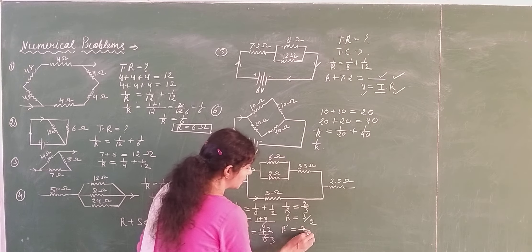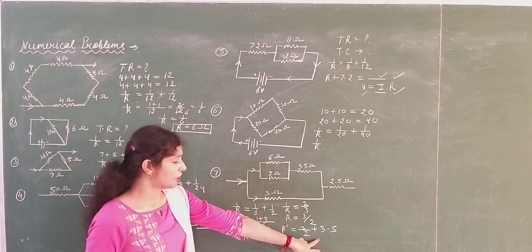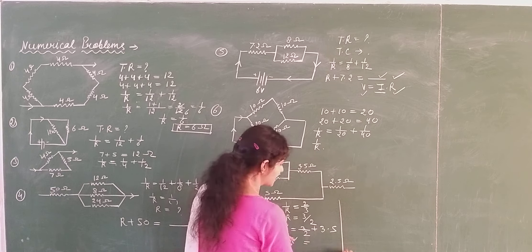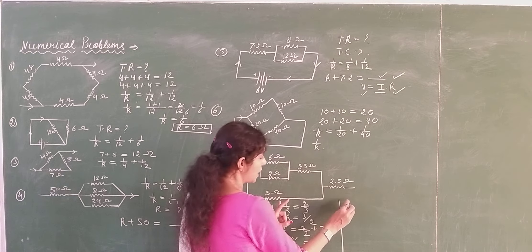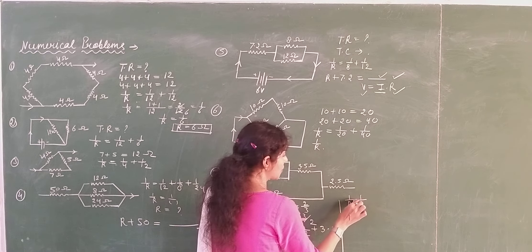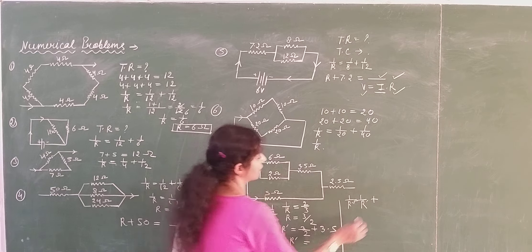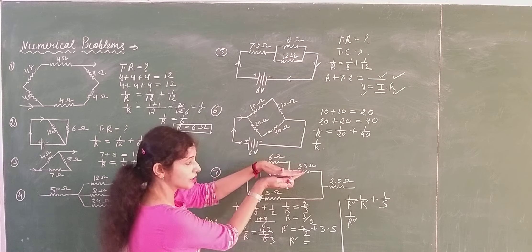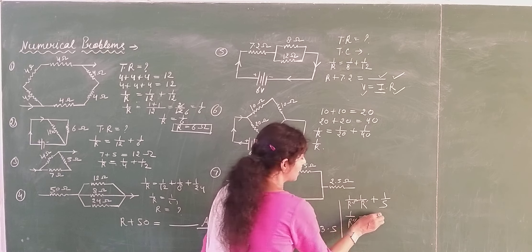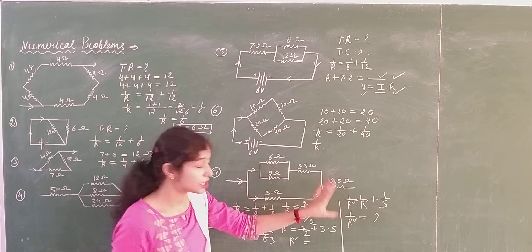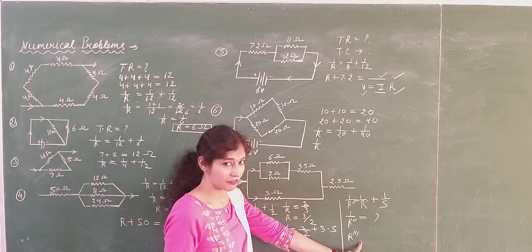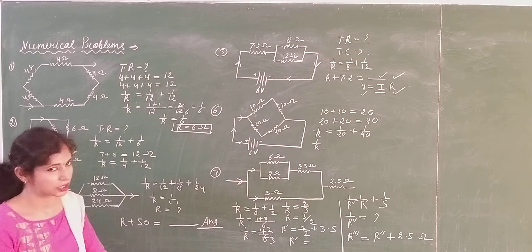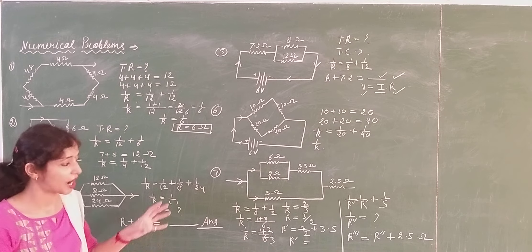So R dash equals 3 over 2 plus 3.5. Whatever value you get for R dash, it is connected in parallel with the 5 ohm resistor. So 1 over R double dash equals 1 over R dash plus 1 over 5. Once you find R double dash, connect it in series with the 2.5 ohm resistor. So the final total resistance equals R double dash plus 2.5 ohm. Solve it properly and share your answer in the comment box.